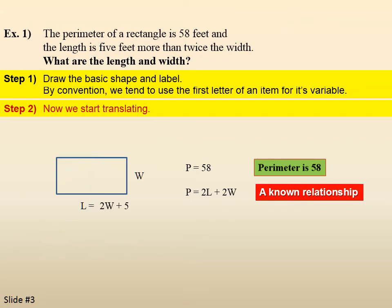And we have a known relationship for perimeter for length and width. The perimeter is 2 times the length plus 2 times the width. Step 3, put the pieces together and solve.